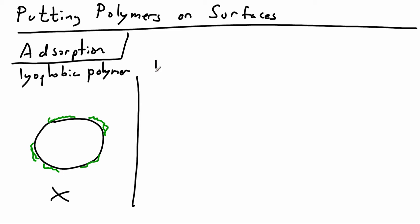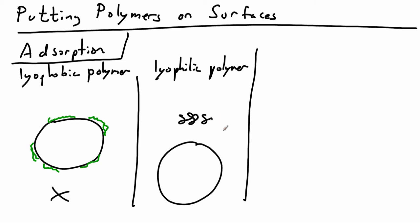We could imagine having a lyophilic polymer and that, at first glance, seems great. Well, that means the polymer dissolves really well in solution and flops around a lot. What can happen then is that it just doesn't absorb very well. So the chains tend to stay in solution and not adsorb onto the polymer.